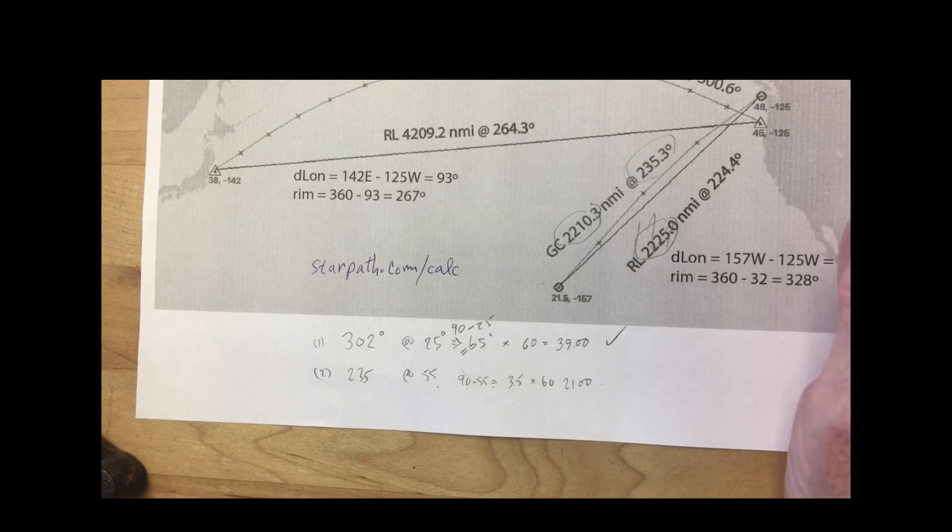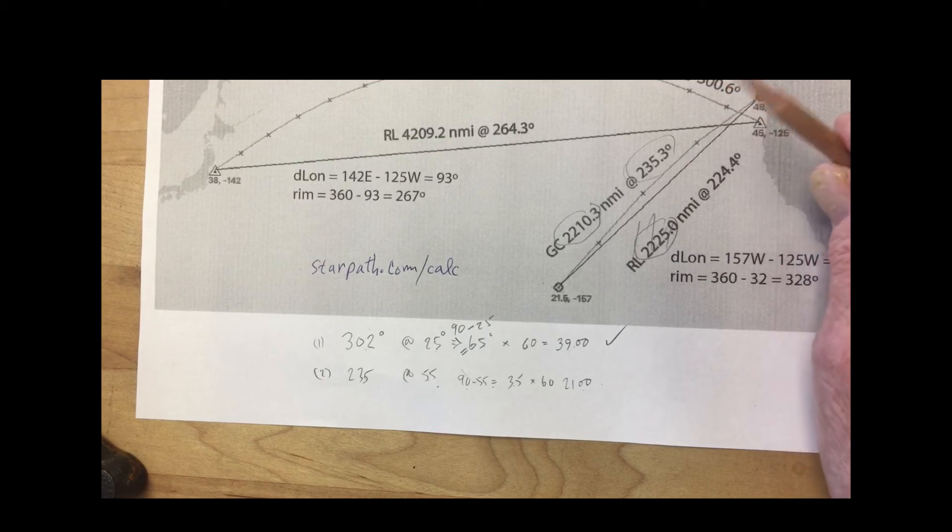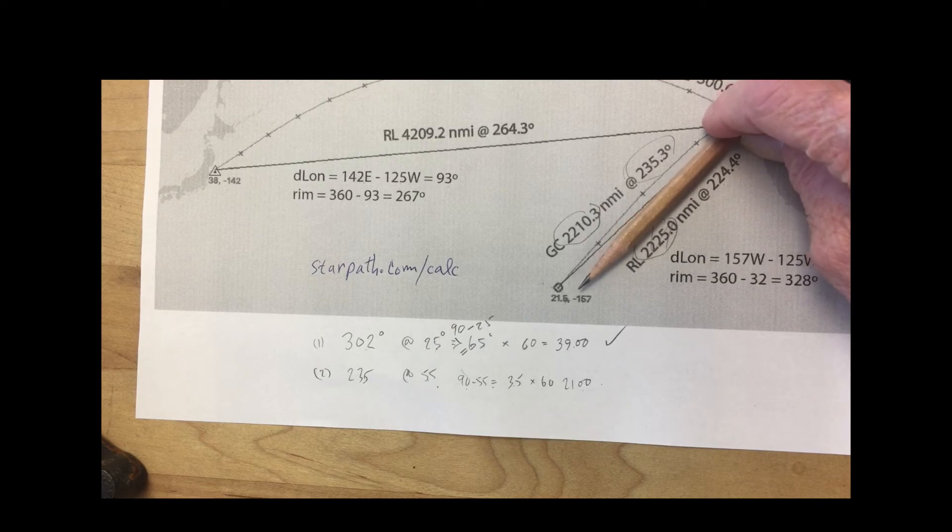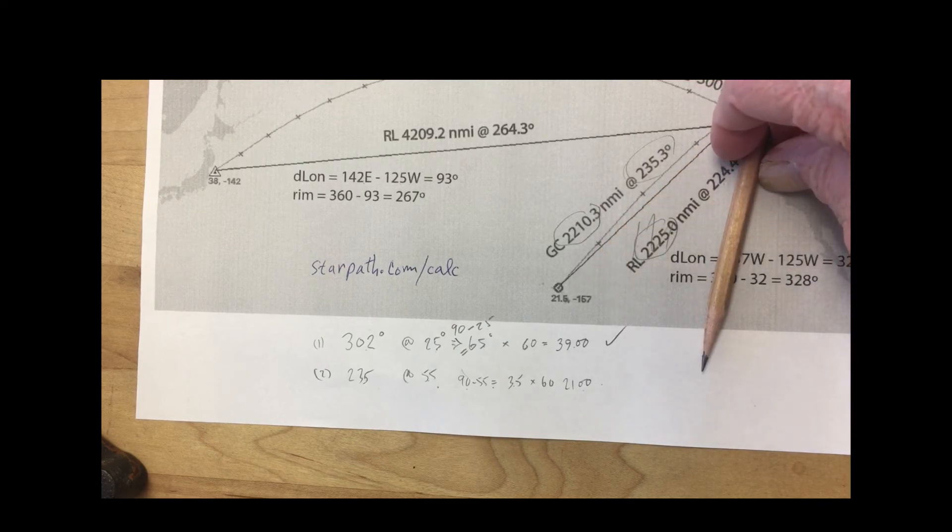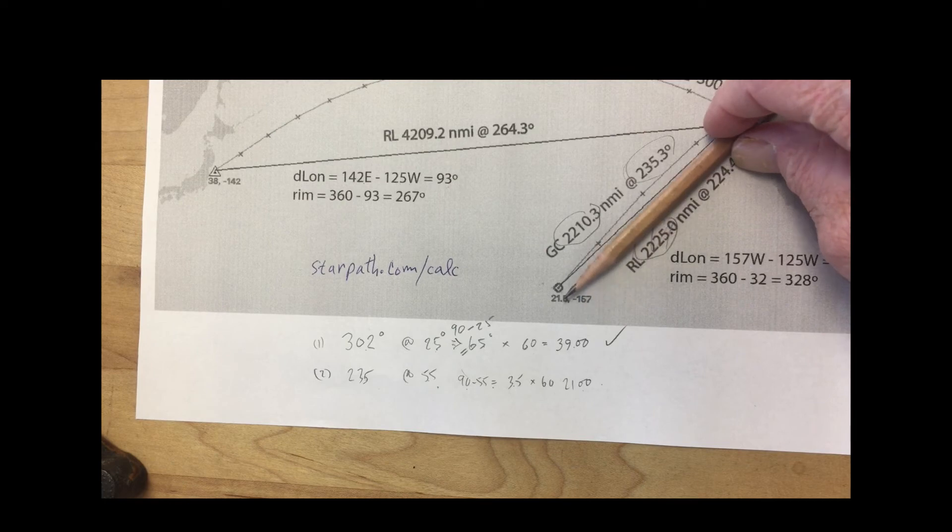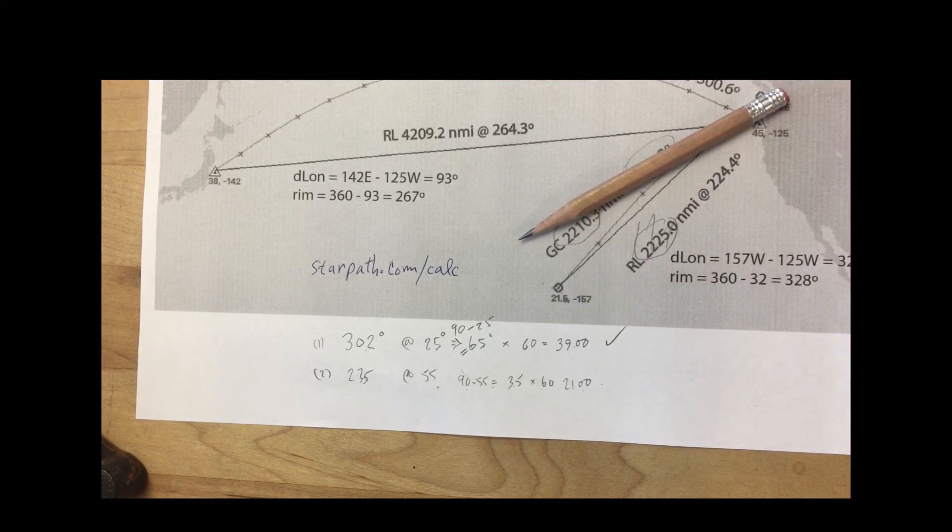So we're back here. We know that if we end up—let's say we want to go rhumb line, if we can. Normally you don't even want to go rhumb line, you want to go down here further south. But let's say you want to go rhumb line, but you end up beating somehow and you can't go that way. So you end up going clear up here at 235, and everybody says, 'Oh, that's too bad, we're not going the right way.'